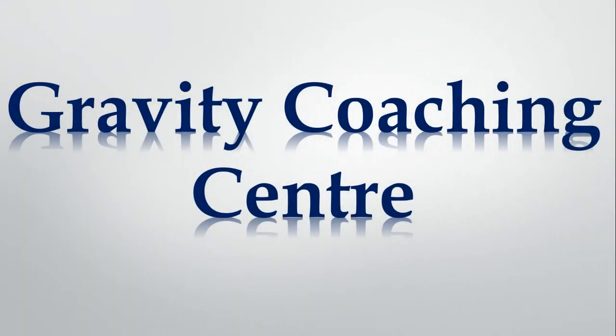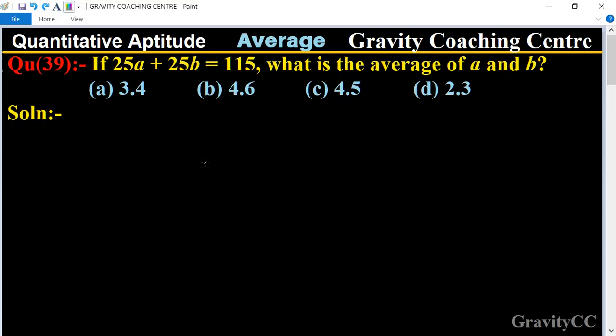Welcome to our channel Gravity Coaching Center. Quantitative Aptitude, chapter Average, question number 39. If 25a + 25b = 115, what is the average of a and b? Here given 25a + 25b = 115.